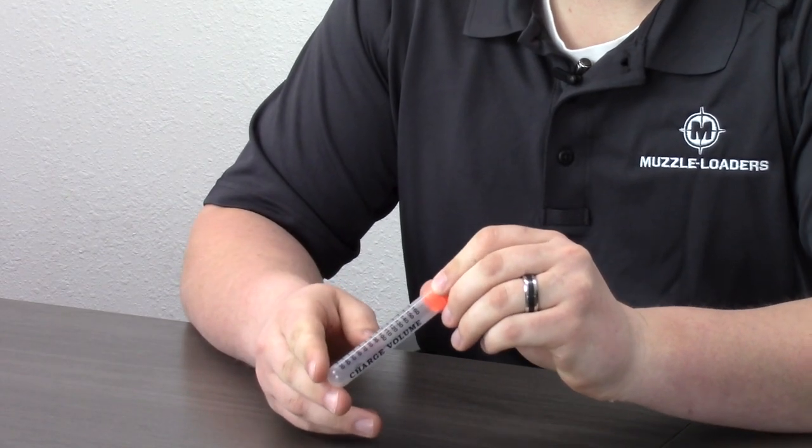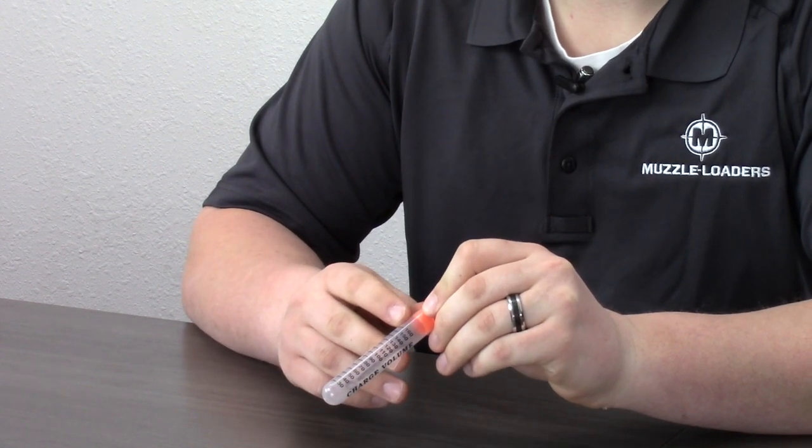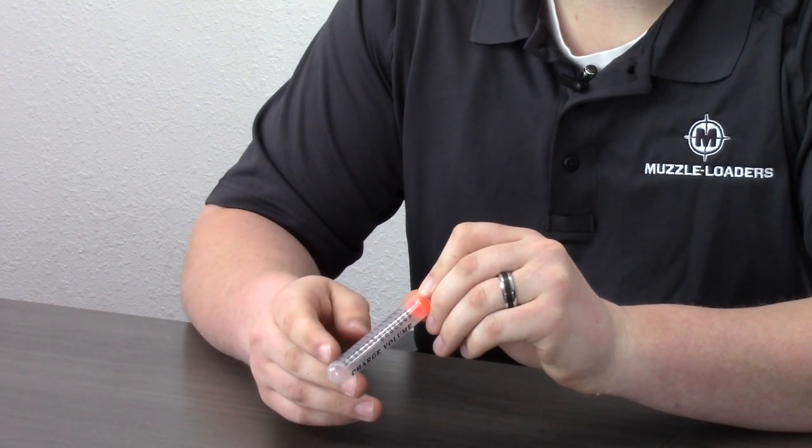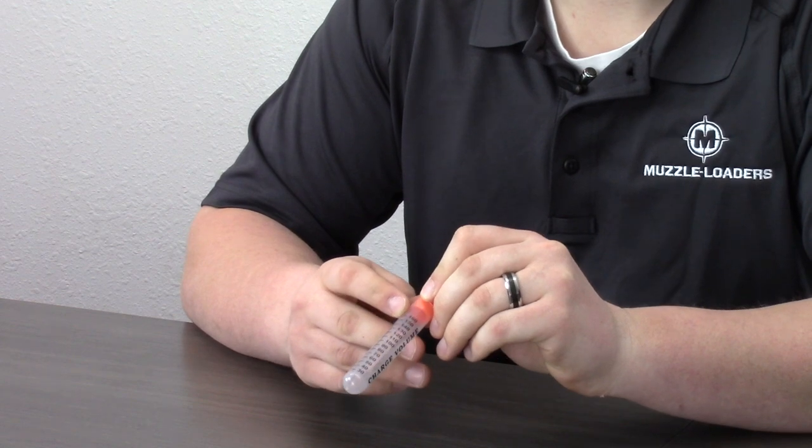As you can see, these charge tubes hold up to 160 grains of powder and we have measuring increments from 30 to 160 grains.